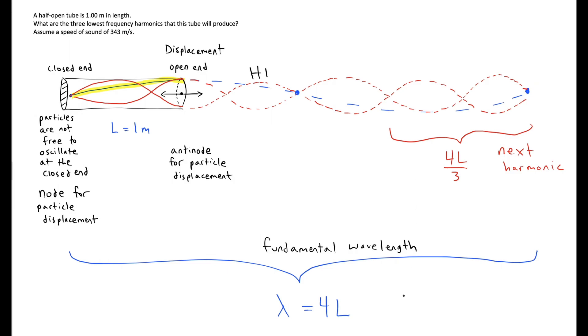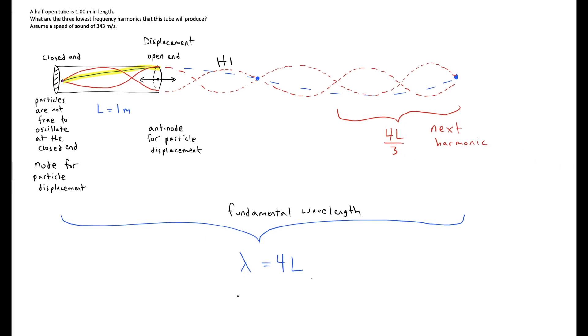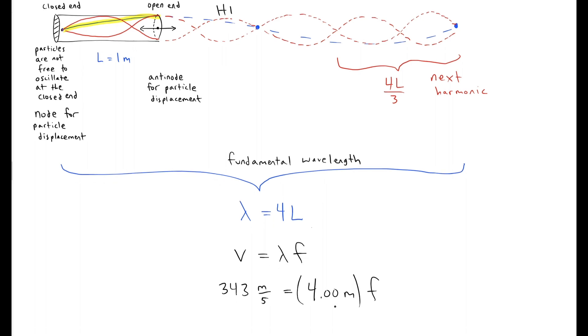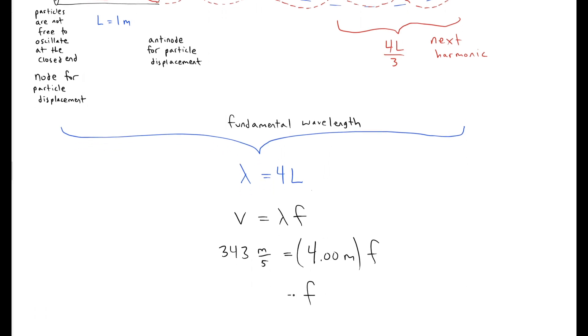So let's calculate the frequency of the fundamental wavelength in air. We would use the wave formula to find that, plugging in a speed of sound of 343 meters per second, let the wavelength be 4 meters because it's four times the length of the pipe, and we can now solve for the frequency of the fundamental.